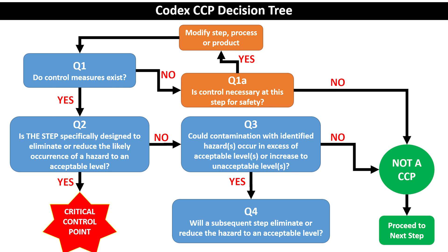If question 3 is yes, you proceed to question 4: will a subsequent step eliminate the hazard or reduce it to an acceptable level? This question looks ahead in the process. For example, if you are at the receiving stage and cooking follows later, your answer is yes and receiving is not a CCP for microbiological hazards. But if you are at hot holding and the food goes directly to the consumer with no further hazard control, your answer is no and hot holding becomes a CCP.